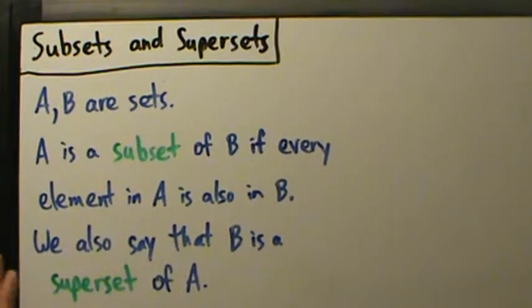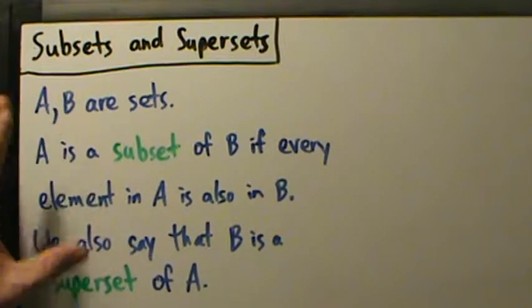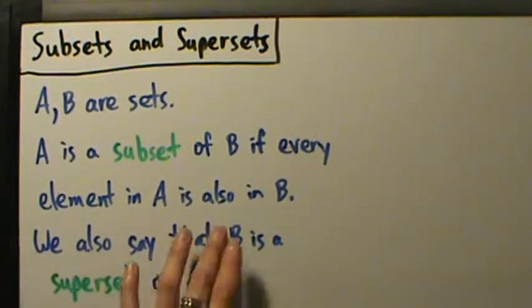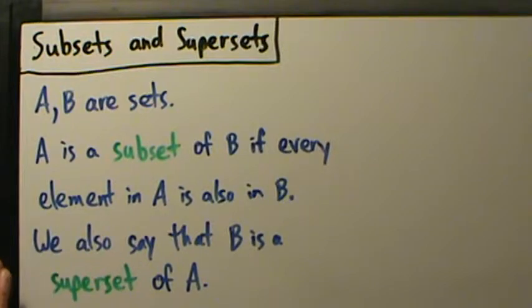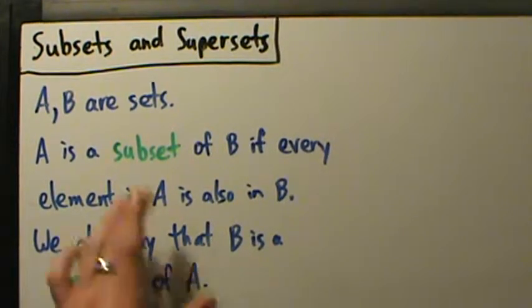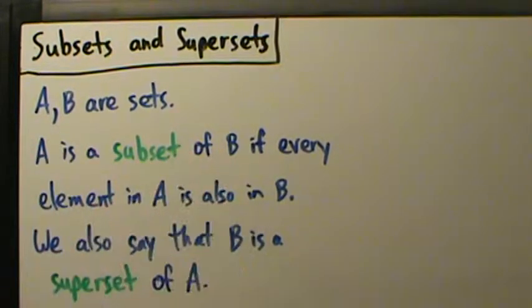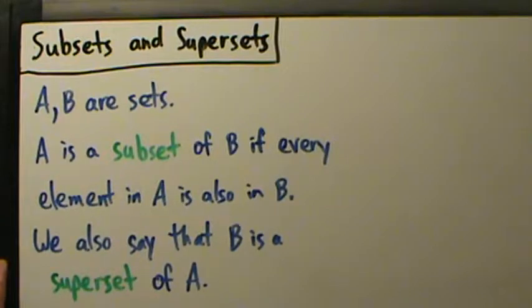So A is a subset of B. And in this case, we also say that B is a superset of A, because everything in A is also in B. So A is a subset of B, and B is a superset of A — it's the same thing.